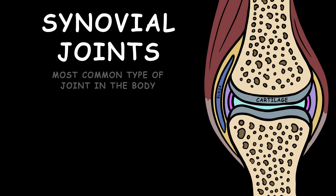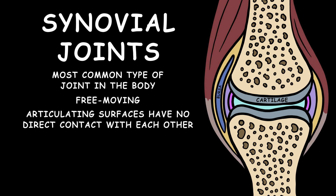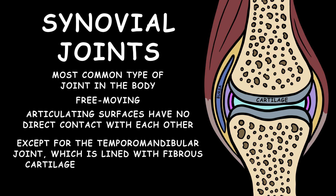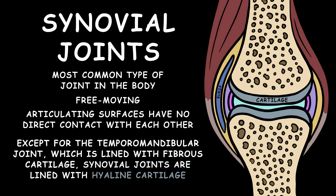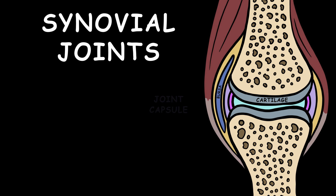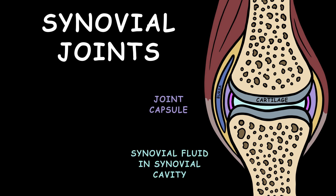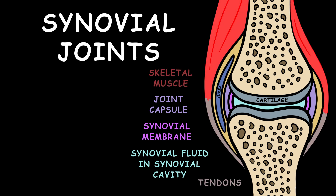Synovial joints are the most common type of joint in the body. The articulating surfaces of these free-moving joints have no direct contact with each other. Except for the temporomandibular joint, which is lined with fibrous cartilage, synovial joints are lined with hyaline cartilage. A capsule encases the joint cavity, and a synovial membrane covering the capsule's interior secretes synovial fluid that lubricates the joint, reducing friction of bone movement. Joints are further reinforced by tendons, ligaments, and skeletal muscle.